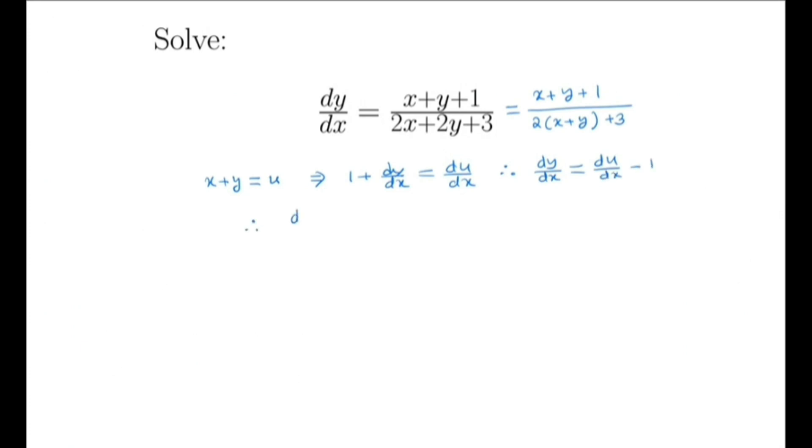By substituting we get du/dx minus 1 equals u plus 1 over 2u plus 3. So we have du/dx equals 1 plus u plus 1 over 2u plus 3. So it is 2u plus 3 in the numerator, and 2u plus 3 plus u plus 1 equals 3u plus 4 over 2u plus 3.